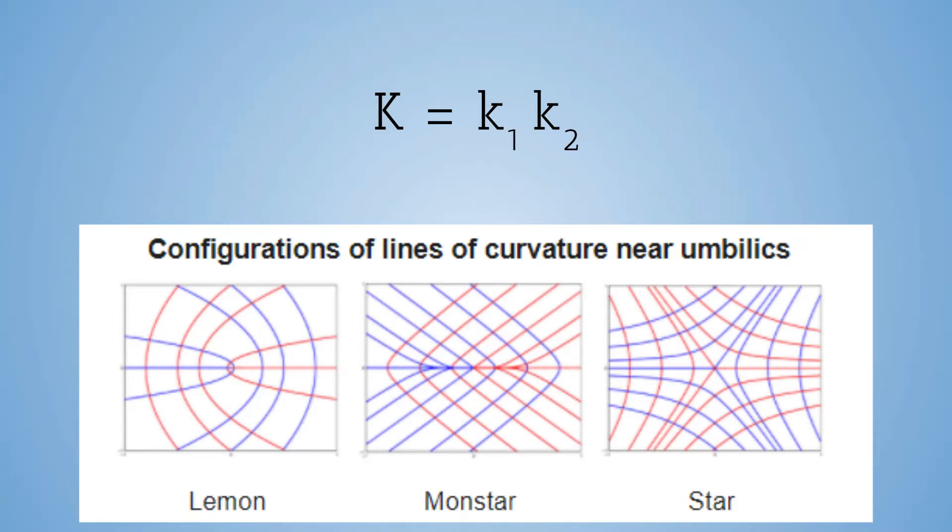I won't go into too much detail, as I could easily talk about curvature for the whole time, but to remain negative and fulfill the equation, one of the curvatures must be positive and the other negative. As seen here, if both k1 and k2 are positive or are both negative, the output will be positive.